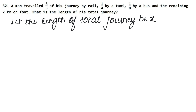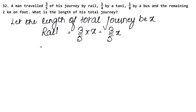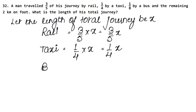Let the length of total journey be x. Three-fifths of this journey he covered by rail, so that is 3/5 of x, written as three upon five x. One-fourth of x was covered by taxi, so one upon four x. The bus covered one upon eight x. The remaining journey of two kilometers he covered on foot.